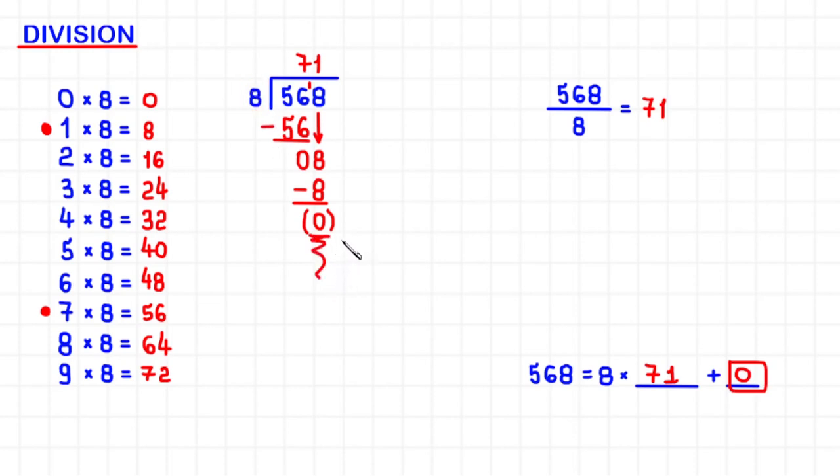Since in this division the remainder is 0, we can say that 568 is divisible by 8. Or equivalently, we can say that 568 is a multiple of 8. It is exactly 71 times 8 since the remainder was 0.